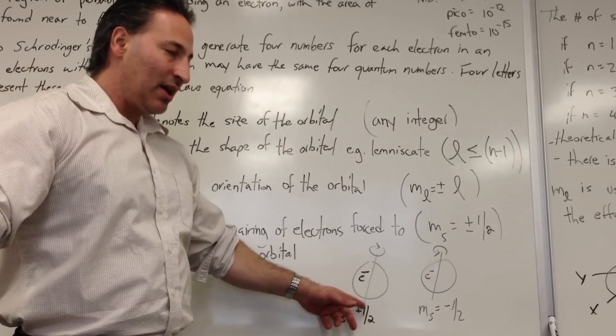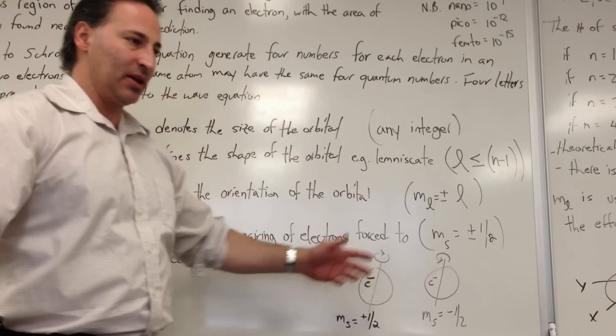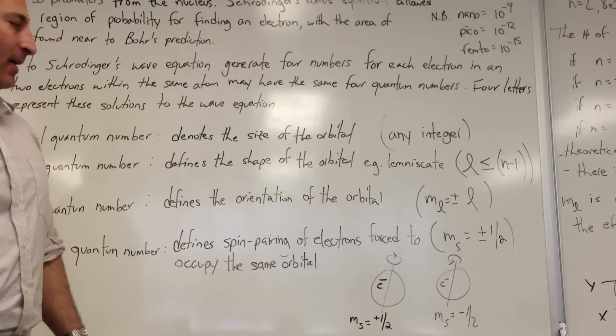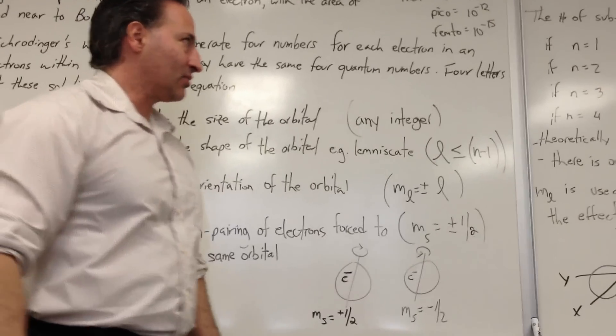And that's what this M sub S can mean. It means the number is plus one-half or negative one-half. It's simply an answer to the solution of the Schrödinger wave equation, and it represents the spin pairing of those electrons.